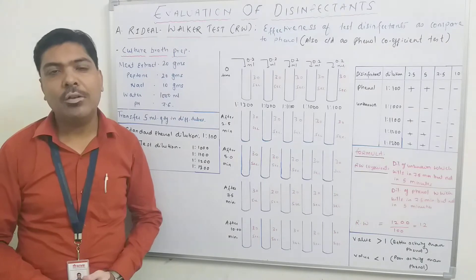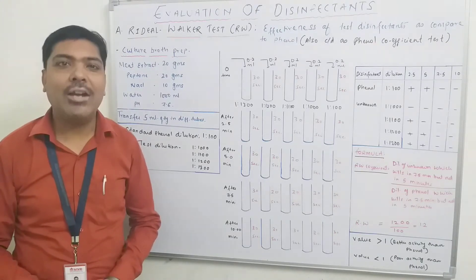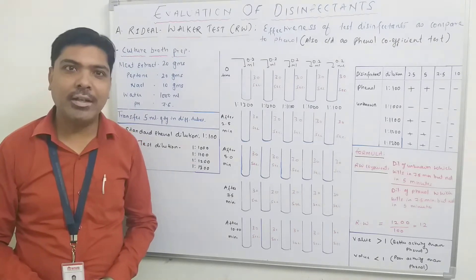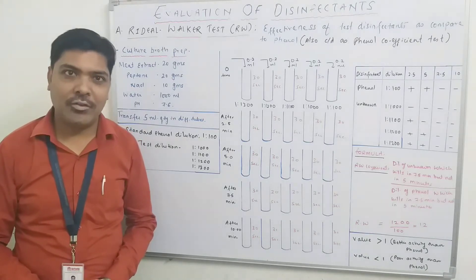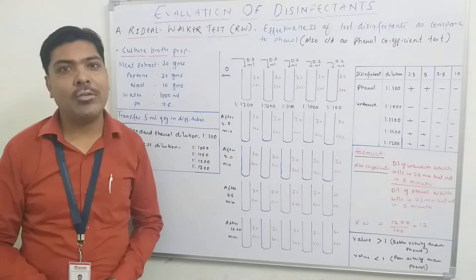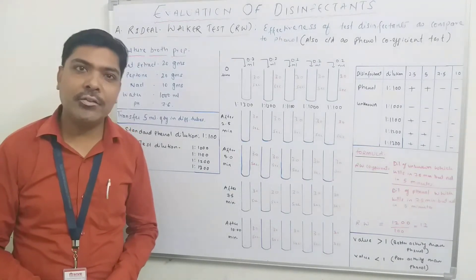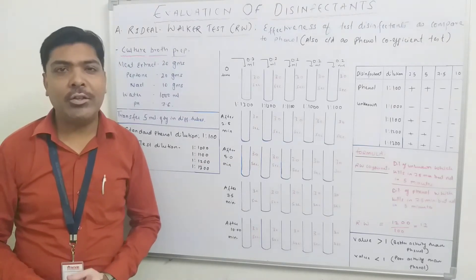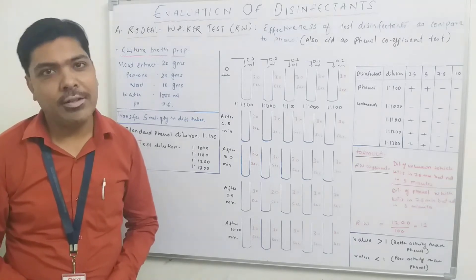In the previous video, we discussed about various disinfection processes and the ideal properties of a disinfectant, as well as various factors that affect the process of disinfection. We also studied various classes of disinfectants most commonly used in any pharmaceutical industry or hospital. In today's video lecture, the topic of discussion is evaluation of a disinfectant.